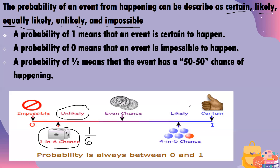The word likely means a 51% to 99% chance, sitting between certain and even chance on the number line. For example, we have five marbles — four blue and one red. The probability of getting a blue marble is likely, because there are more blue marbles than red, giving you a bigger chance of picking blue.